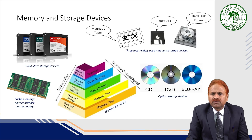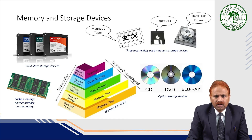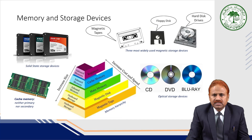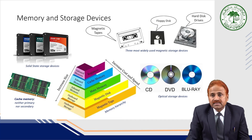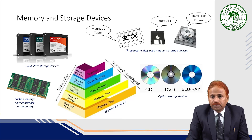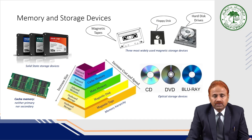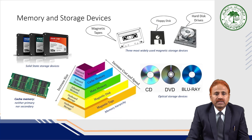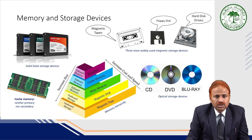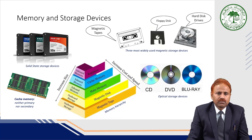Here we can see some examples of memory devices. The three most widely used magnetic storage devices include hard disks, floppy disks, and magnetic tapes. Optical storage devices include CDs, DVDs, and Blu-ray disks. Solid state storage devices, known as SSDs, allow faster access to data, and they are increasingly being used today.